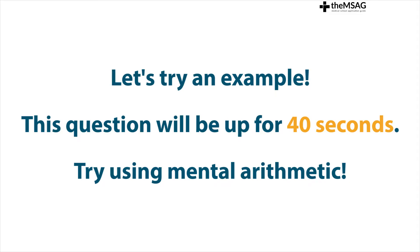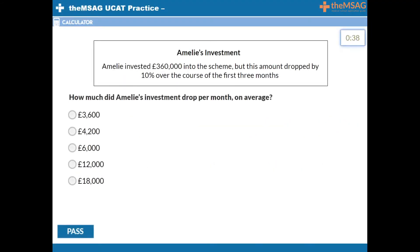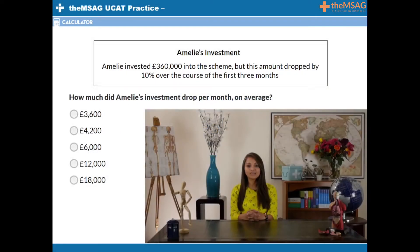Let's see how mental arithmetic helps you in the next question. Question 1: Amelie invested 360,000 pounds into a scheme, but this amount dropped by 10% over the course of the first three months. How much did Amelie's investment drop per month on average?